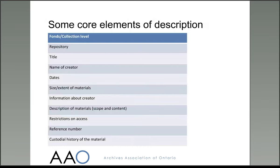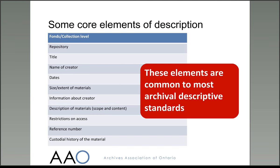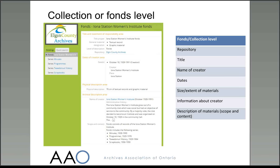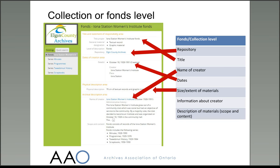This slide summarises some of the core elements that need to be included in an overall description of a fonds or collection. These are found in most of the archival descriptive standards in use today. Here is an example of an overall fonds-level description from Elgin County Archives, prepared according to the Rules for Archival Description. If I bring in the table of contents from the previous slide, you can see how these map across to the various fields of this database, which has been set up to mirror the elements of that particular standard.